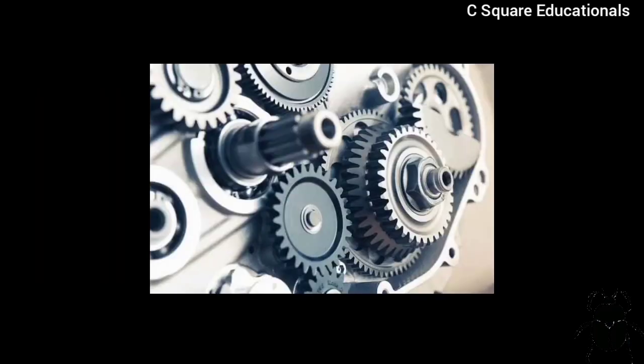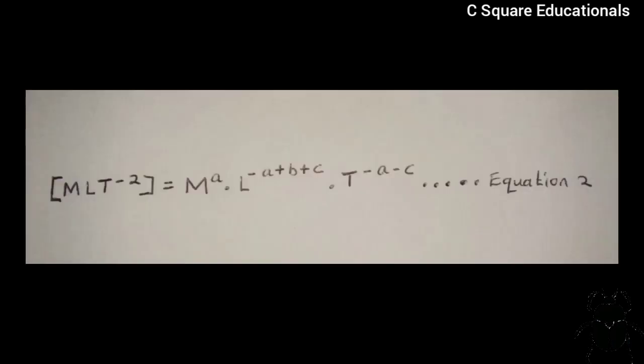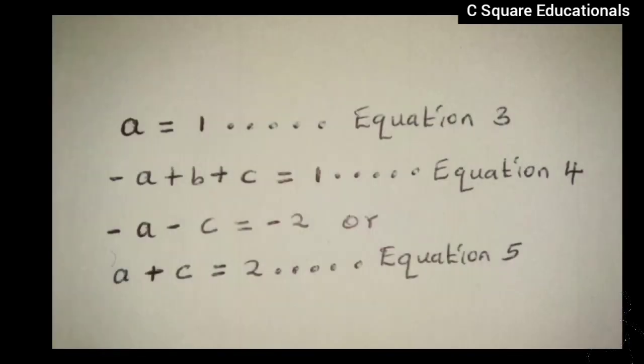Now, we know that in classical mechanics, mass, length, and time are independent entities. Now, equating the superscripts or subs of mass, length, and time respectively from our second equation, we obtain A to be equivalent to 1. Let us call this equation 3.